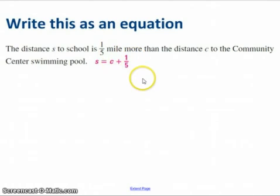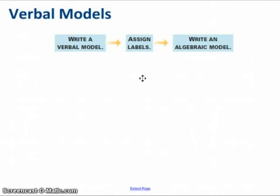Now the textbook goes on to talk about verbal models and how to write a verbal model. As they explain in the simplest diagram here, you start by writing a verbal model, then you assign labels. In other words, you put in variables and numbers in place of the words of the verbal model.